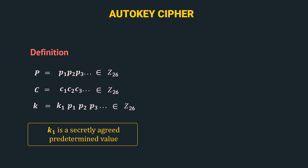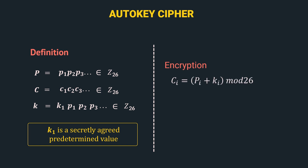Now let's look at the encryption and decryption algorithm of auto-key cipher. The encryption algorithm is: ci = pi + ki mod 26. For generating the ith character of the ciphertext, we require the ith character of the plain text and the ith character of the key stream. For generating c1, we do p1 + k1 mod 26. Similarly, for generating c2, we do p2 + p1 mod 26, and so on.